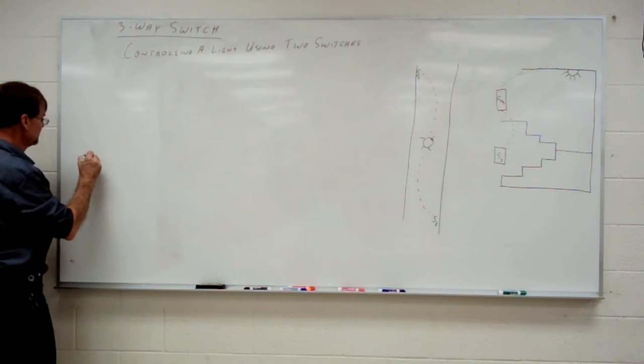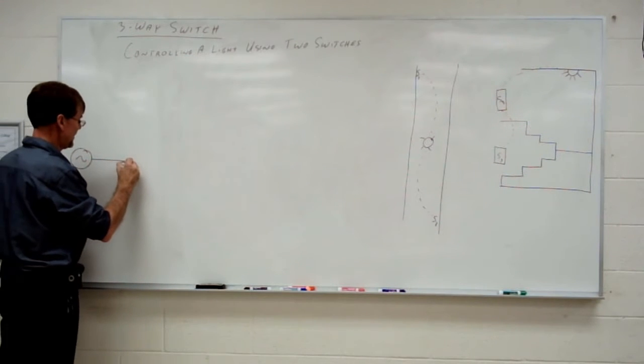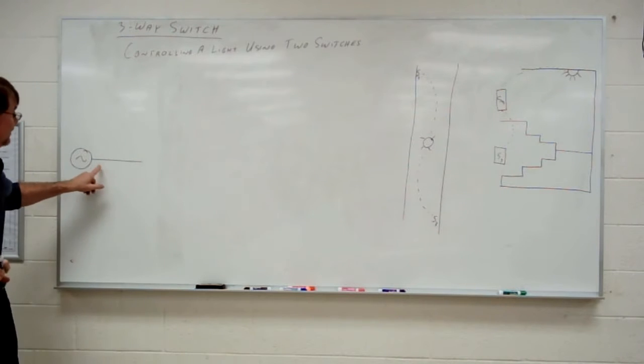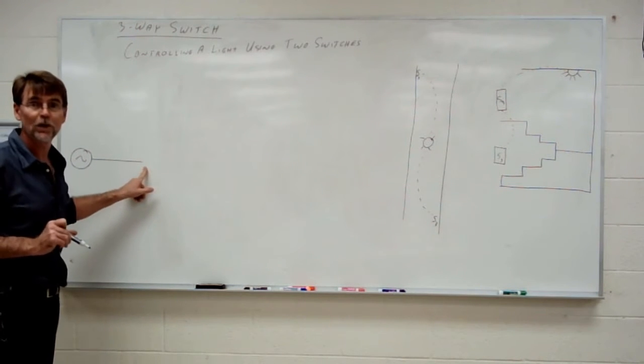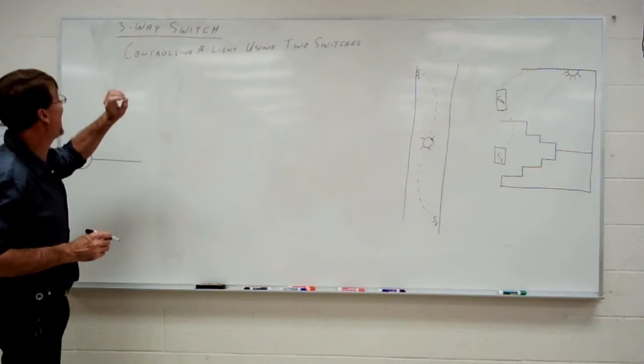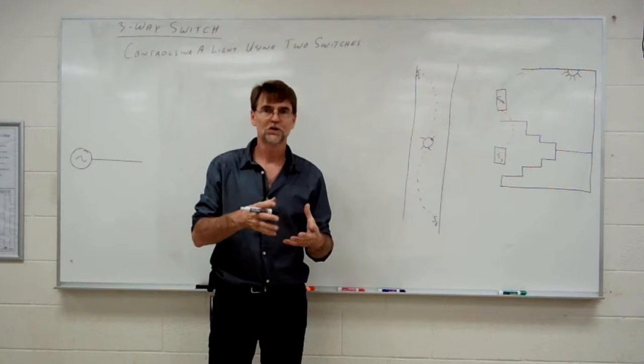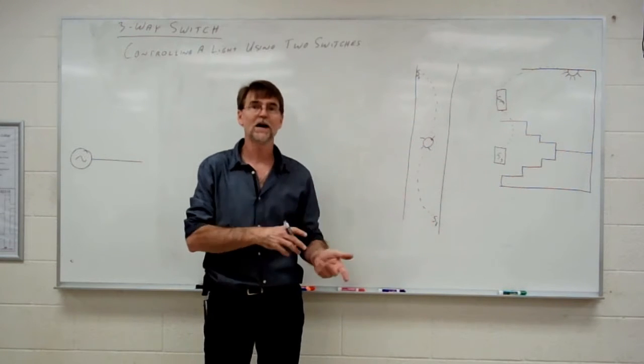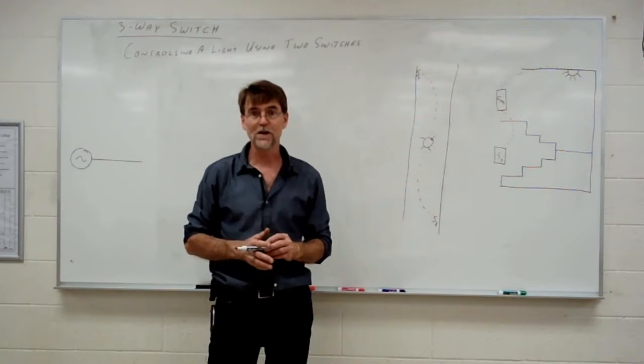So we're going to start at the beginning. Here's our AC power supply. And the AC power supply provides AC power. Here's line one coming into the first switch. Now the first thing we need to understand is how a three-way switch works. So we've looked at the regular toggle switches that we've used so far and it's got two posts on it. We have a line side and a load side. Power comes in and if you close the switch then the power carries on out.